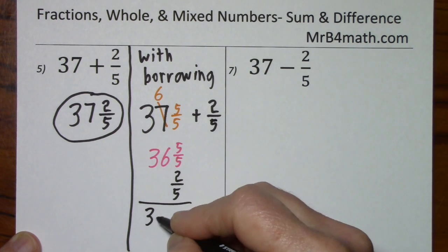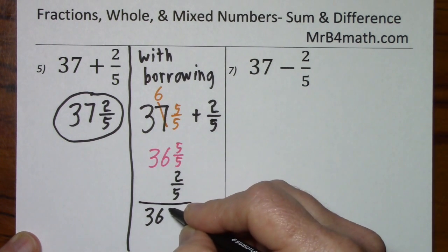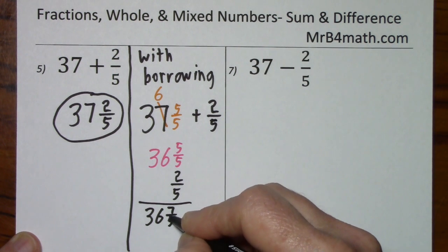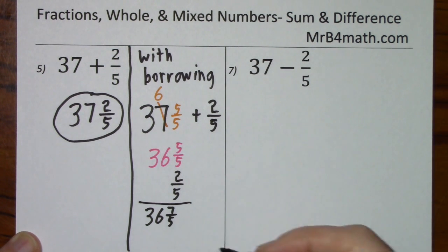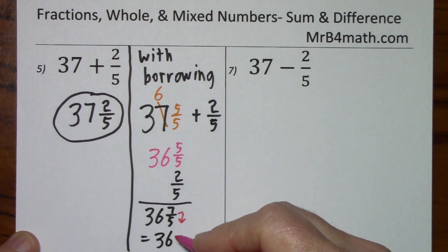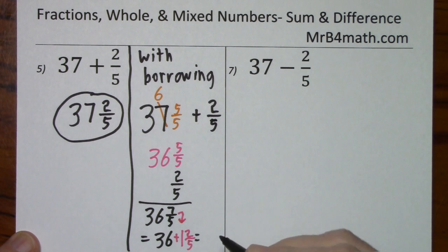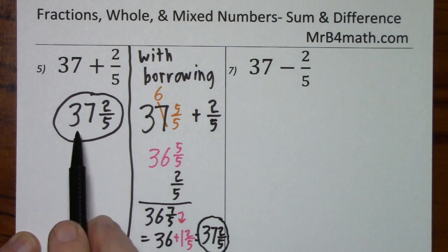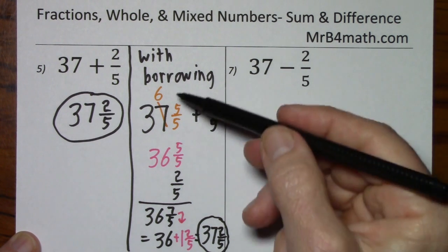We're going to add 2 fifths. This gives us 36 and 7 fifths. But 7 fifths is improper. So, it's actually 36 plus 1 and 2 fifths. Or finally, 37 and 2 fifths. So, that got us to the same place. But it certainly is a long road.